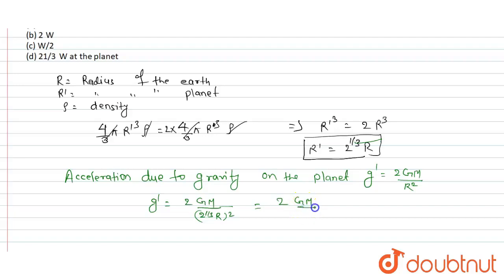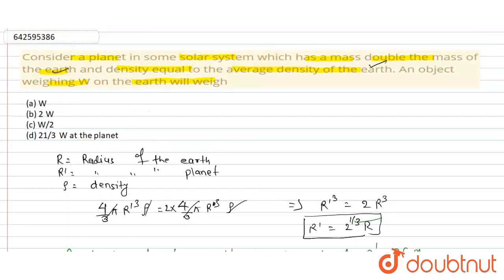And Gm/R² is written as g, so W' equals 2^(2/3) times weight. And we see this option is present in option number D, so the correct option is D.